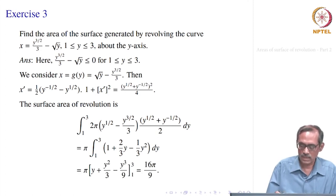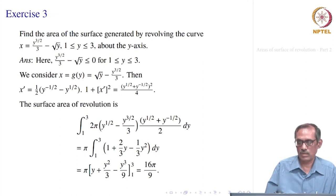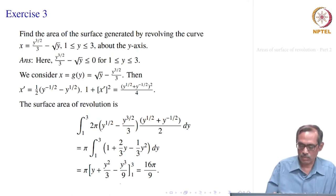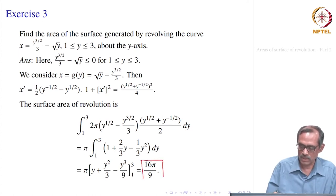Multiplying out, we get 2π times the integral of (1 + 2y/3 - y²/3) dy. Integrating: y + y²/3 - y³/9, evaluated from 1 to 3, and simplifying gives 16π/9.